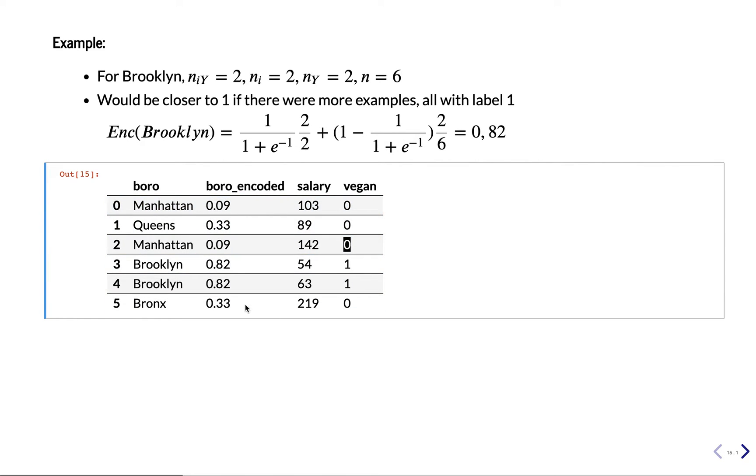So it assigns one value per class. If you have multiple classes, you'll have multiple of these features. And the value tells you something about how likely this category will predict one.